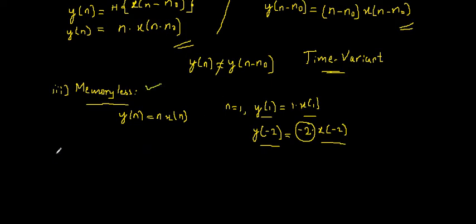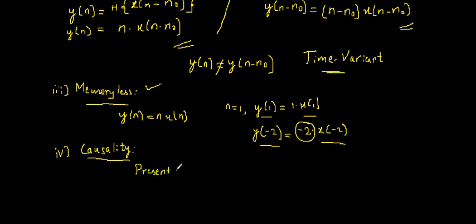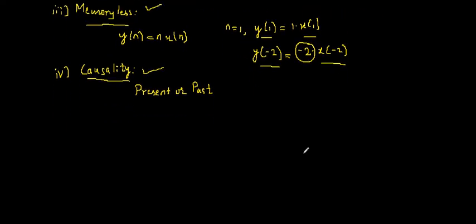The fourth property is causality. A causal system's output at any given time can depend on present or past values of the input, but not on future values. Testing the given system, the output clearly does not depend on any future values. Hence the given system is causal.